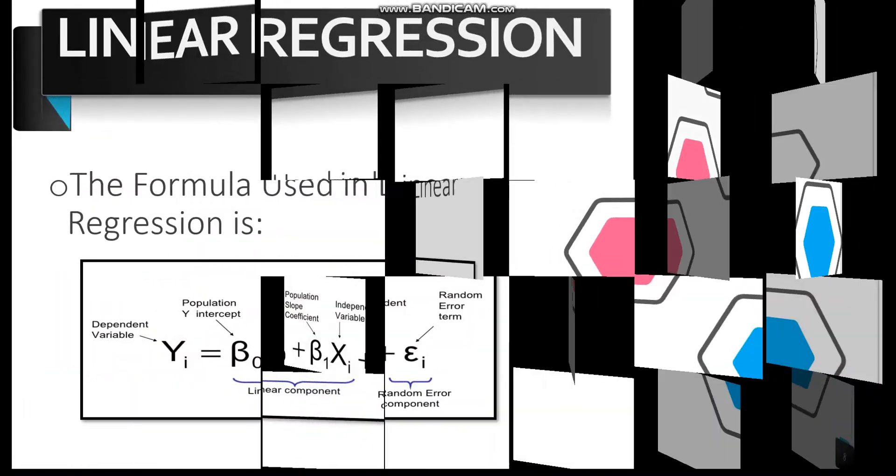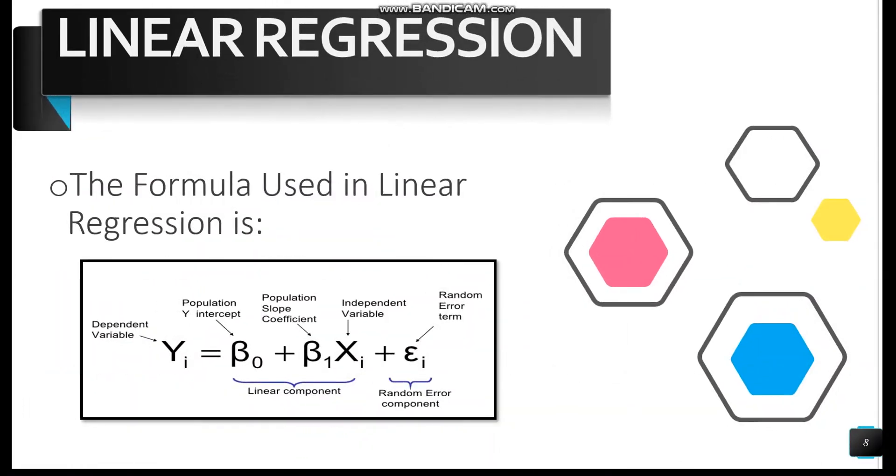The formula used in linear regression is, as shown on the screen: y is the dependent variable, beta naught is the y-intercept, beta 1 is the slope, x is the independent variable, and e is the error.